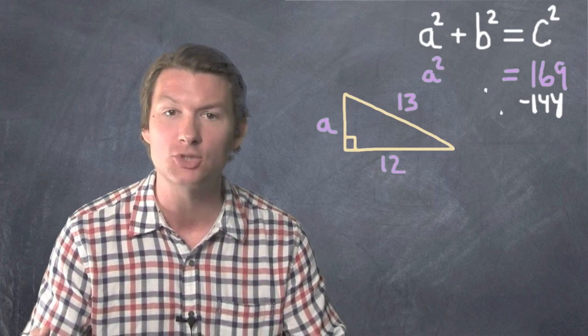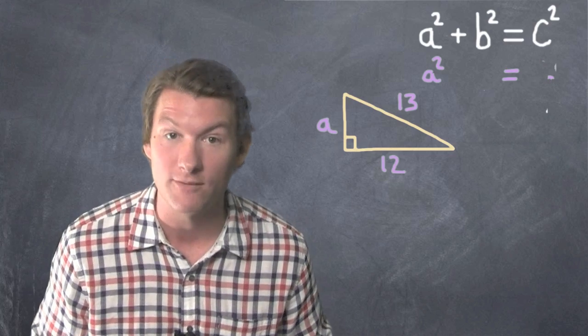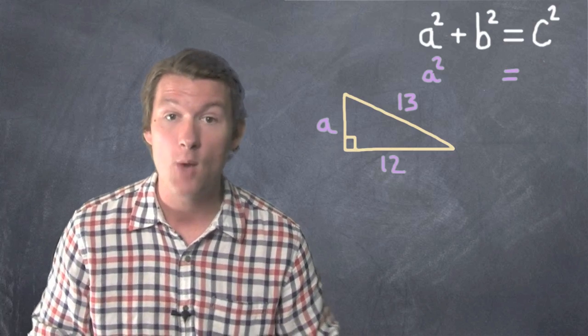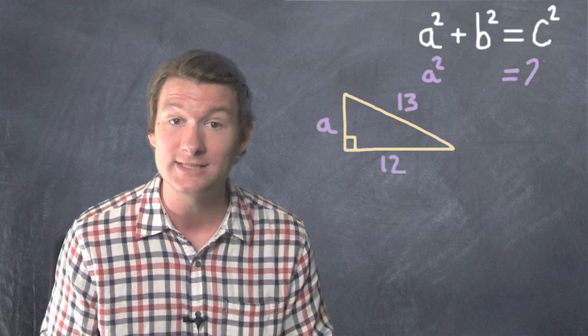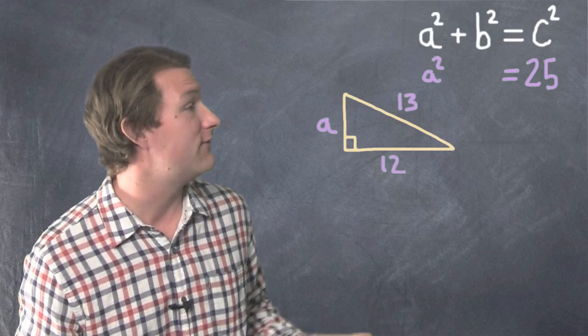What's the opposite of plus 144? It's minus 144. So let's do that on both sides. And we've got a squared equals 169 minus 144, which is 25.